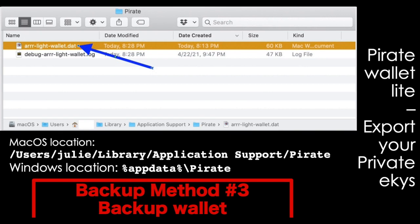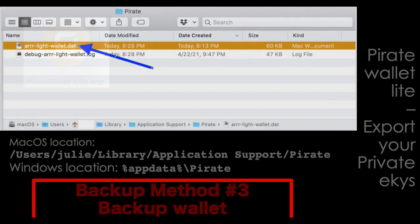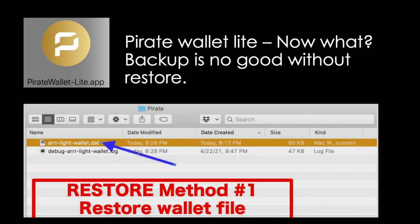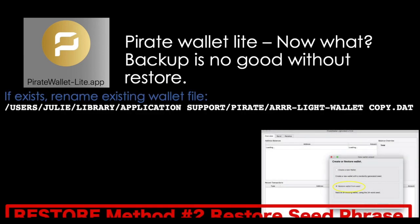However, between the last backup and any new ARRR received into your wallet at a new address, you won't recover those with the .dat file alone — that's when you want your seed phrase or private keys, since the wallet contains your private keys and the transaction registry. What good is a backup if you can't restore? To restore the ARRLiteWallet.dat file, simply copy it back with the same name to that same directory, make sure your Pirate Wallet Lite app is not running, then start the app and your transactions and keys will be there.